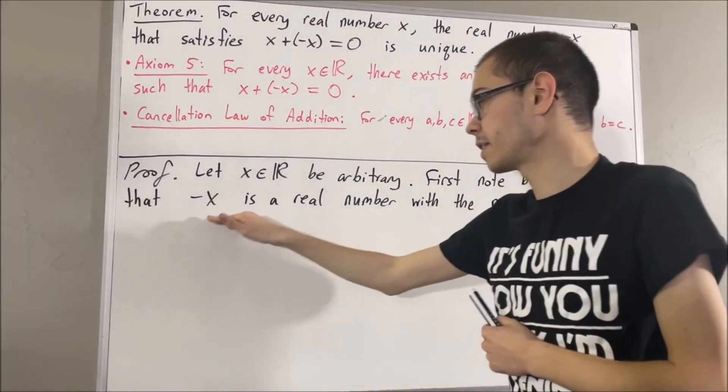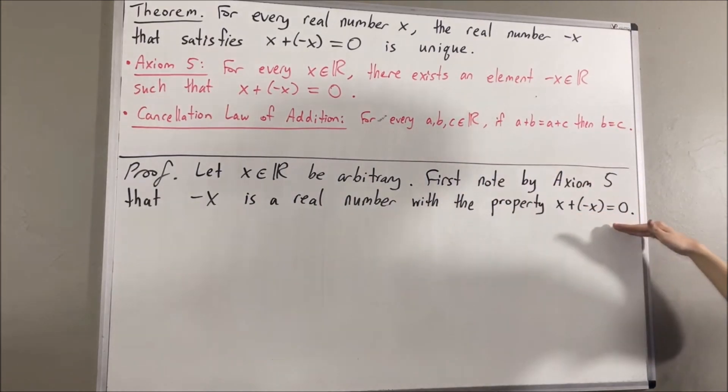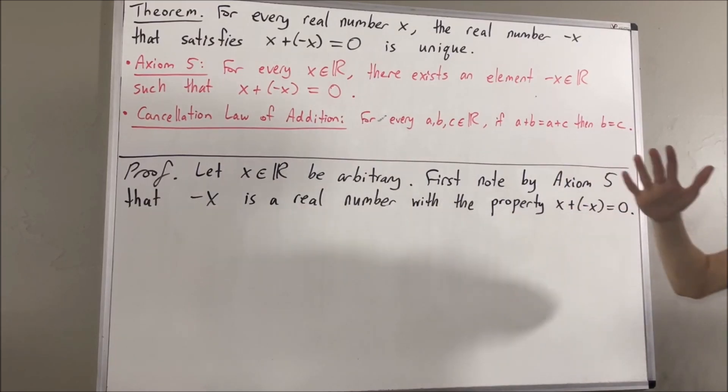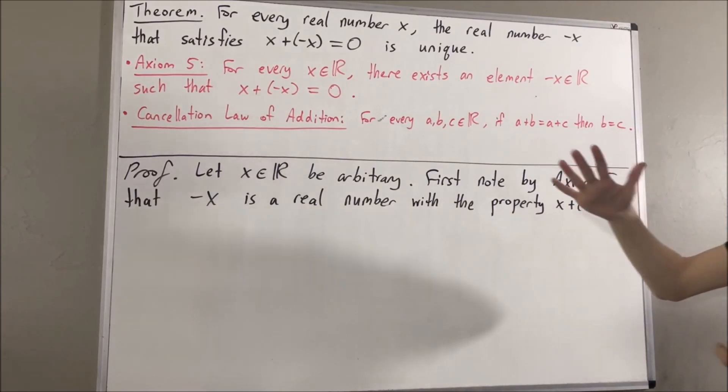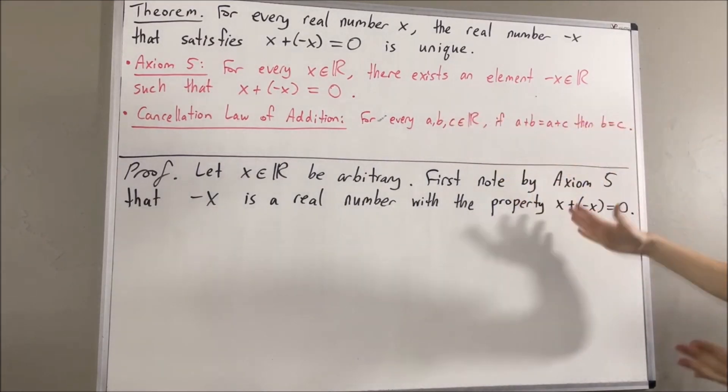And to show that the negative x is the only real number that satisfies this property, let's suppose we have another real number that satisfies this property. I'll call that real number r. So, suppose r is another real number that has this property. So we have x plus r equals 0.